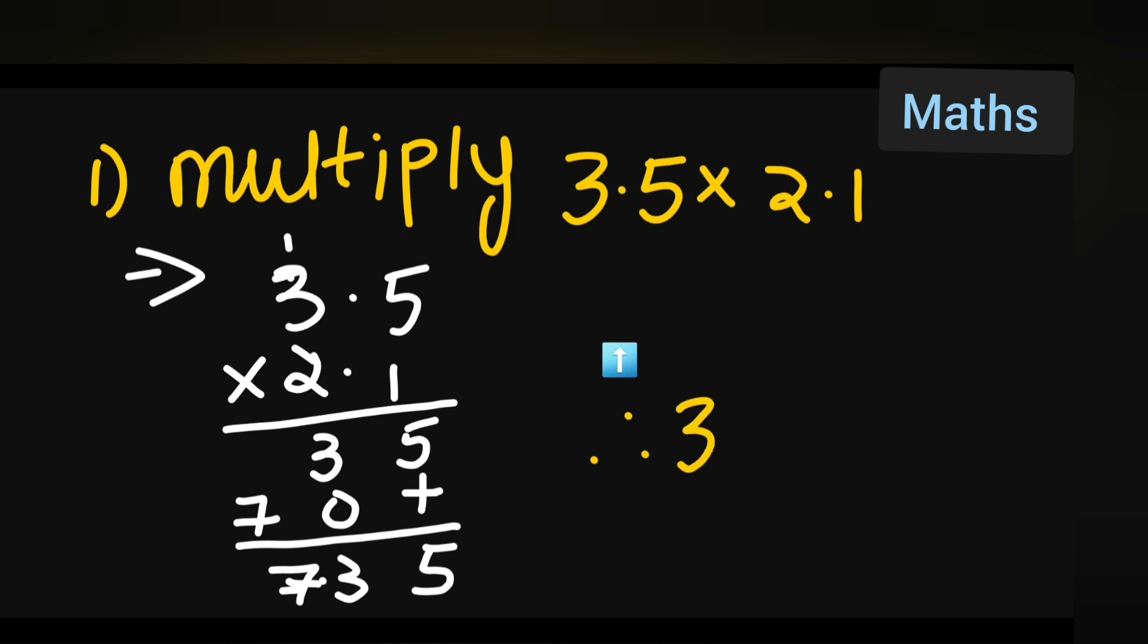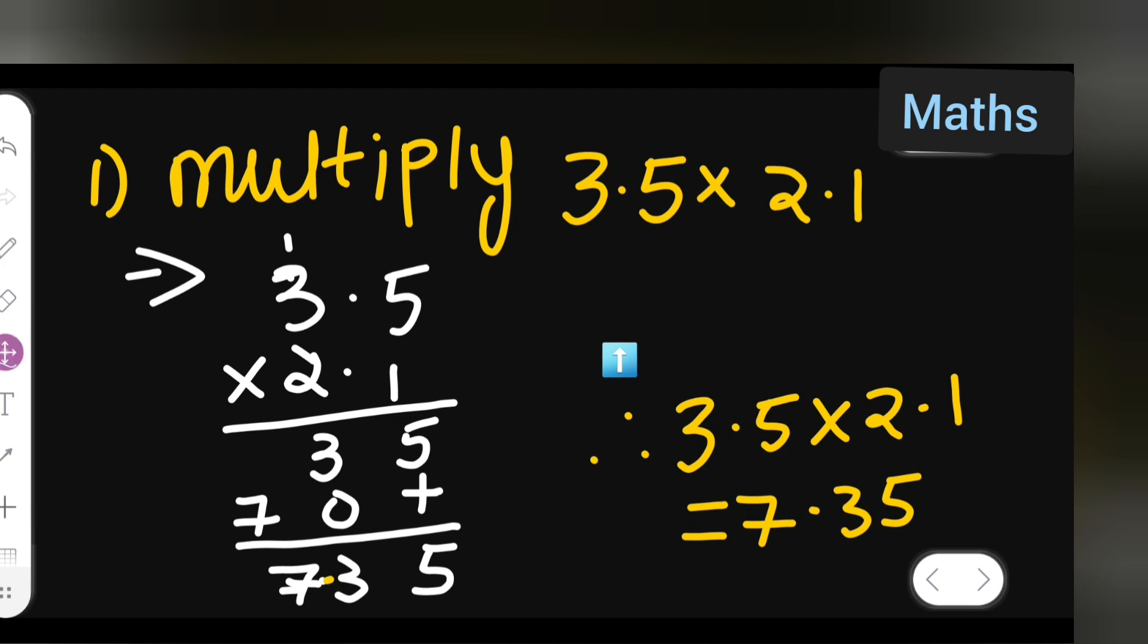Therefore, you can say that 3.5 multiplied by 2.1 is equal to 7.35 because the decimal point is going to come here, 7.35. So I hope you have understood how to multiply 3.5 multiplied by 2.1, and thanks for watching.